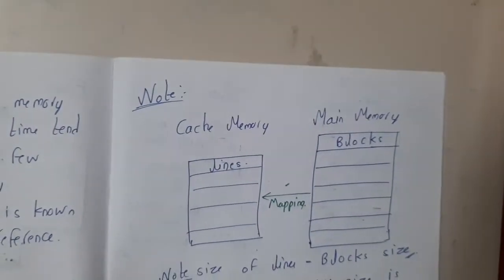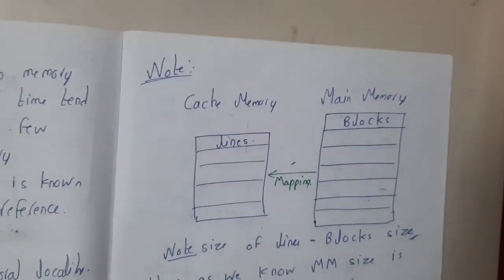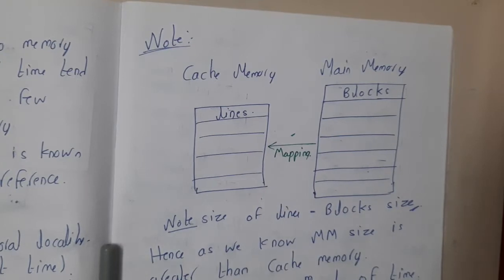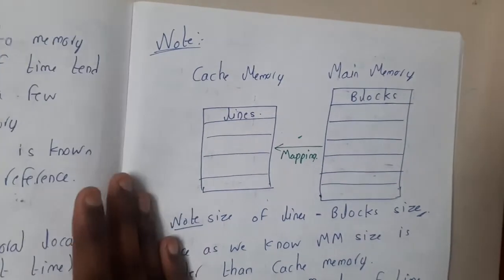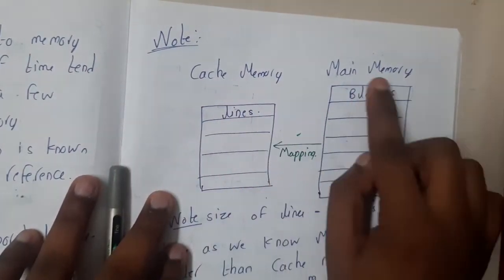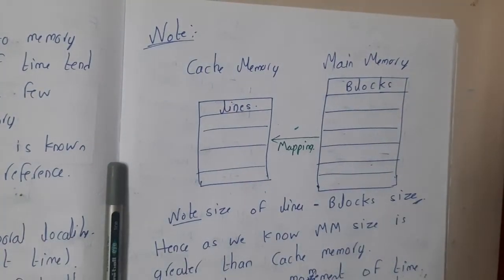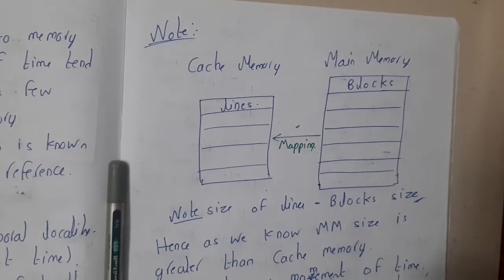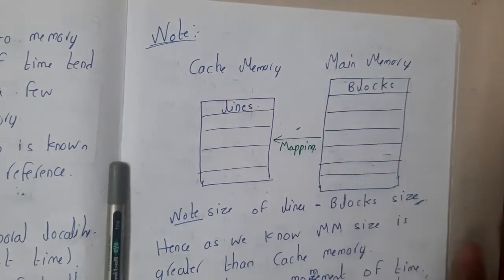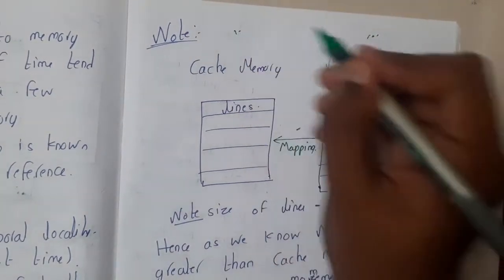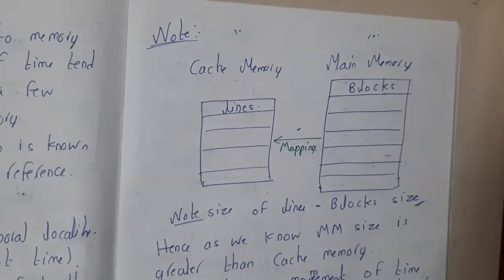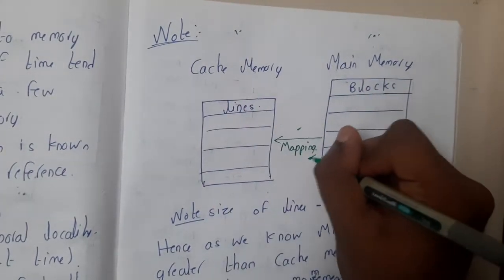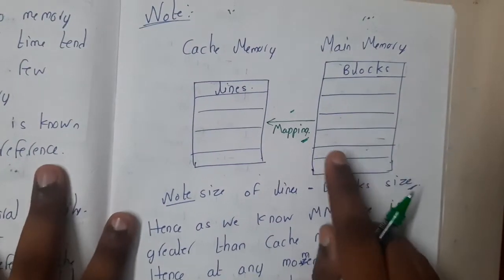Now, some basic cache terminology: in cache, each block is called a line, while in main memory they are called blocks. Blocks from main memory are stored in cache. At any moment, if there are 100 blocks in main memory, cache will hold far fewer — perhaps 10 or 20 lines. How these blocks are managed in cache is the concept of mapping.